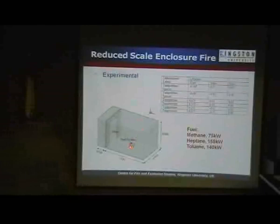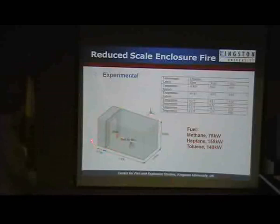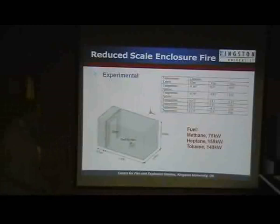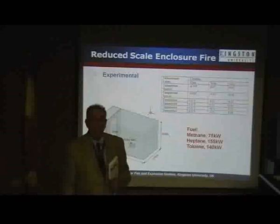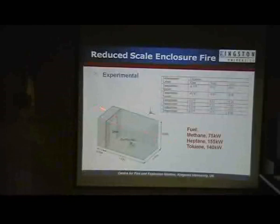In the computations, the model is extended beyond the door — and that's very important. Because if you were to use a code like FDS, which is on automatic, and just say this is the vent and put your vent boundary condition in there, I guarantee you'll get the wrong answer. That vent boundary condition is wrong. So these people are rightly taking the domain outside and putting a pressure boundary condition there, which they have to do in this problem to close it.